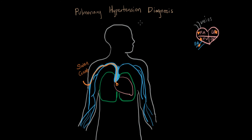For an adult living at sea level, the normal pulmonary artery pressure would be somewhere around 8 to 20 millimeters of mercury. Notice how this is a lot less than the pressures on the systemic side — the left side of our heart has to deal with blood pressure levels of 120, or 140 in some people. On the right side, we're pumping into an area that's normally 8 to 20 millimeters of mercury.